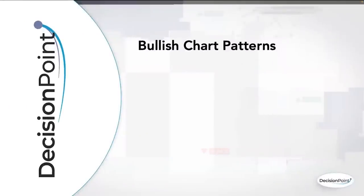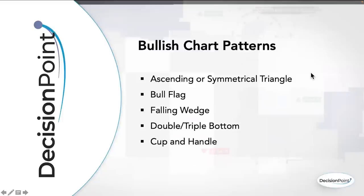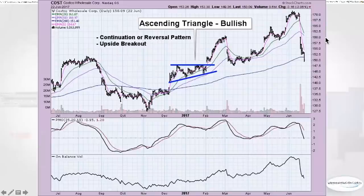As of the recording, we are currently seeing more of a bear market situation, but I'm going through both because you may be watching this during a bull market. The bullish chart patterns we'll cover are: the ascending triangle, the symmetrical triangle, a bull flag, a falling wedge, a double and triple bottom, a cup and handle, and finally a V bottom. V bottoms are interesting — this is what we'll want to watch for at the end of the current bear market, and it was the V bottom that signaled the 2020 bear market was nearly over.